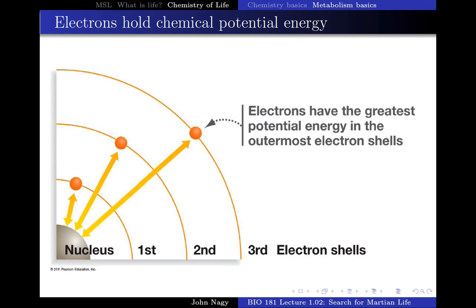That energy can be released to do a number of different things. It can be used to move muscles, move ions, and do all sorts of different things required by your metabolism. That's why we care about these energy states — they are what your metabolism is. They determine the energy you have available to you. Food is high-energy electrons, and what you do is take those high-energy electrons in your body, move them down to a lower energy state, and release them as low-energy electrons. That is the whole basis of metabolism.